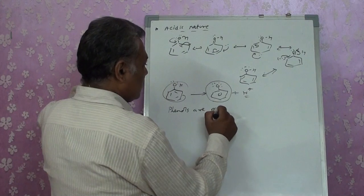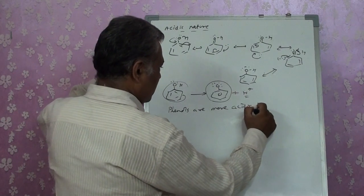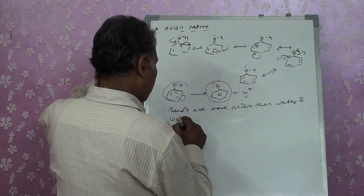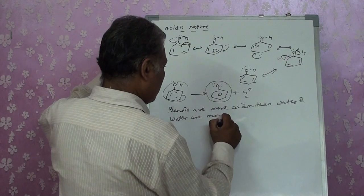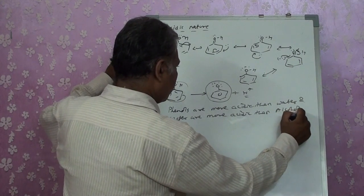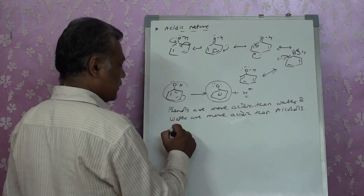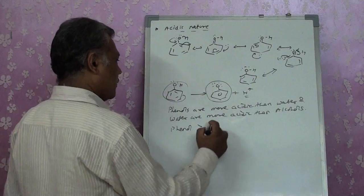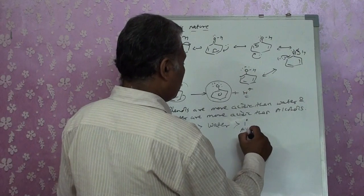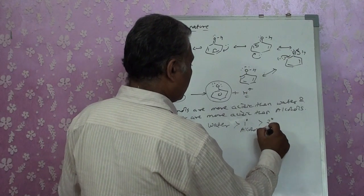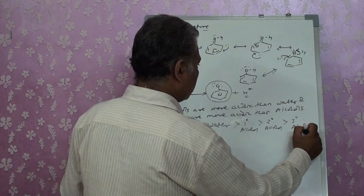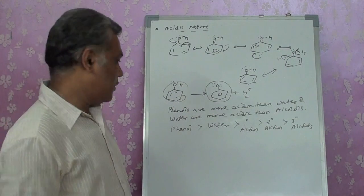Because of the resonance in the molecule H⁺ is easily released, so phenols are more acidic than water. The order we get is: phenols > water > primary alcohol > secondary alcohol > tertiary alcohol.